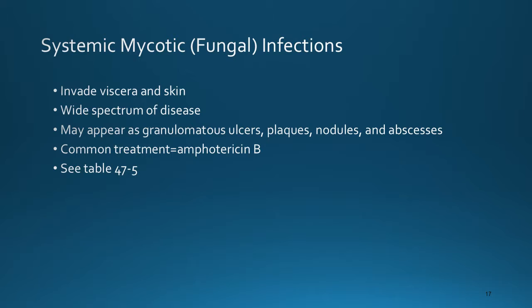Systemic mycotic fungal infections invade the viscera and skin. There is a wide spectrum of these diseases. The usual portal of entry is the lungs, the skin, or sometimes the mucous membranes. These infections may appear as granulomatous ulcers, plaques, nodules, and abscesses. Some are progressive and often fatal; some are very serious; and some resolve spontaneously. The common treatment is Amphotericin B.